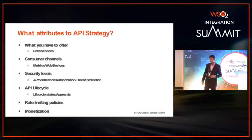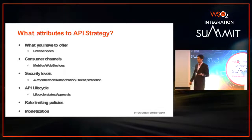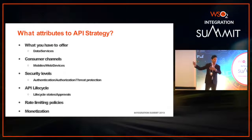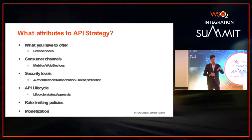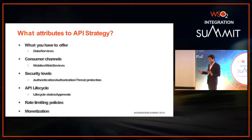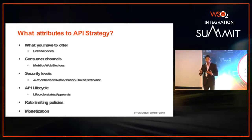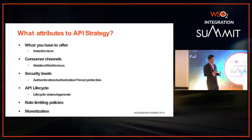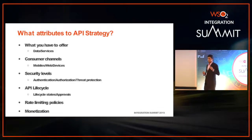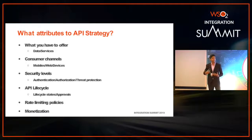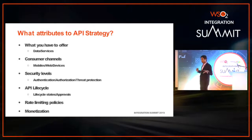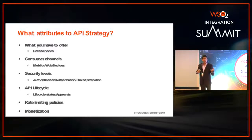Another aspect is API lifecycle. A typical API lifecycle has stages like created, published, deprecated, and retired — but depending on your requirements you may need different lifecycle stages, so you need to decide that. You also need to decide whether you need rate limiting for your APIs and whether you need to enable monetization. When you have answers to all of these, you will end up with your API strategy.